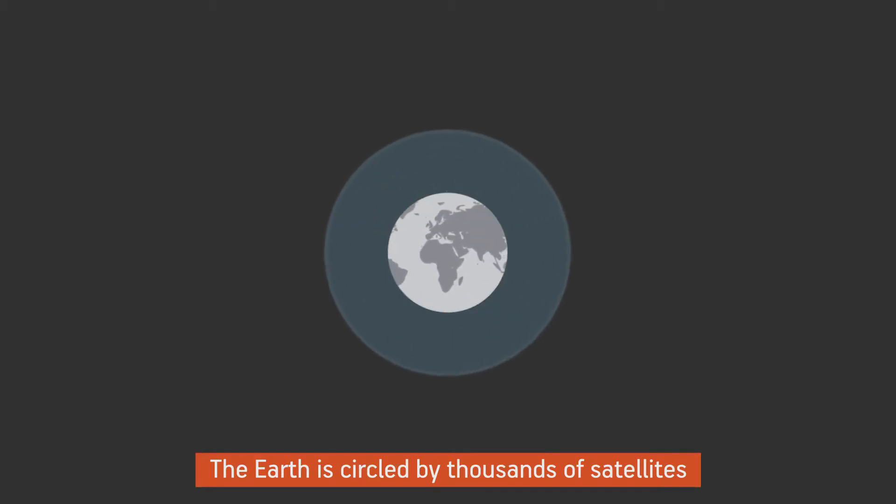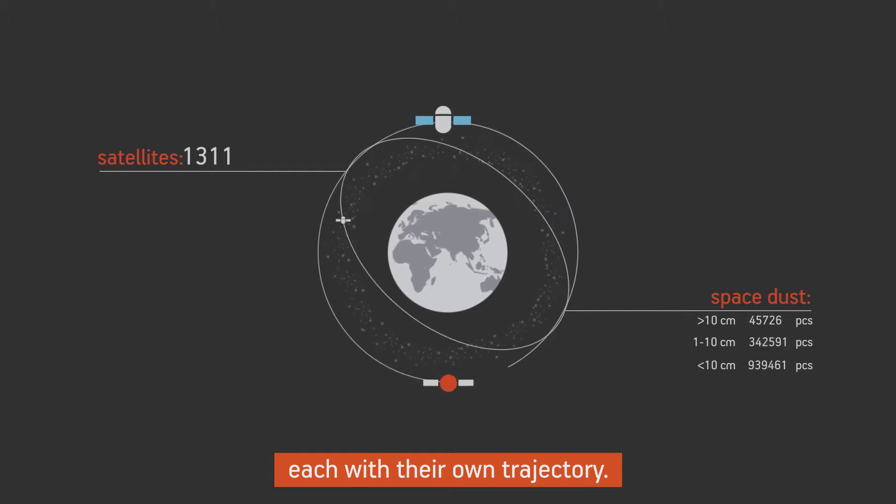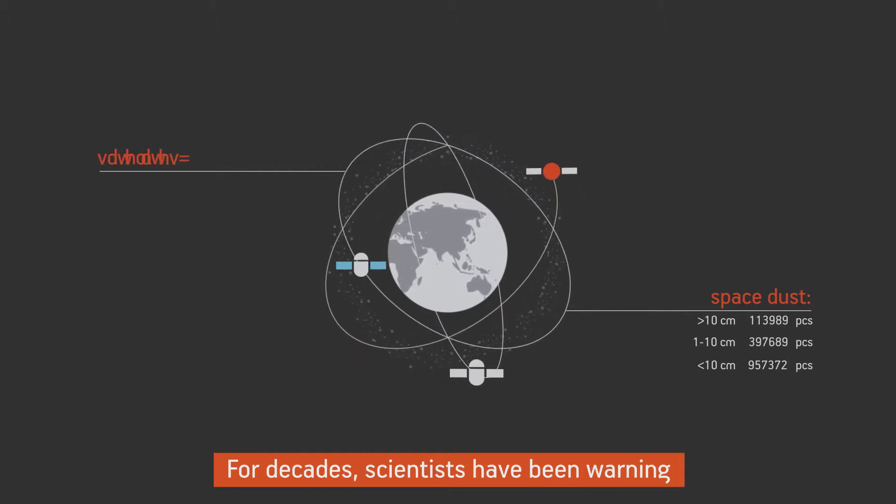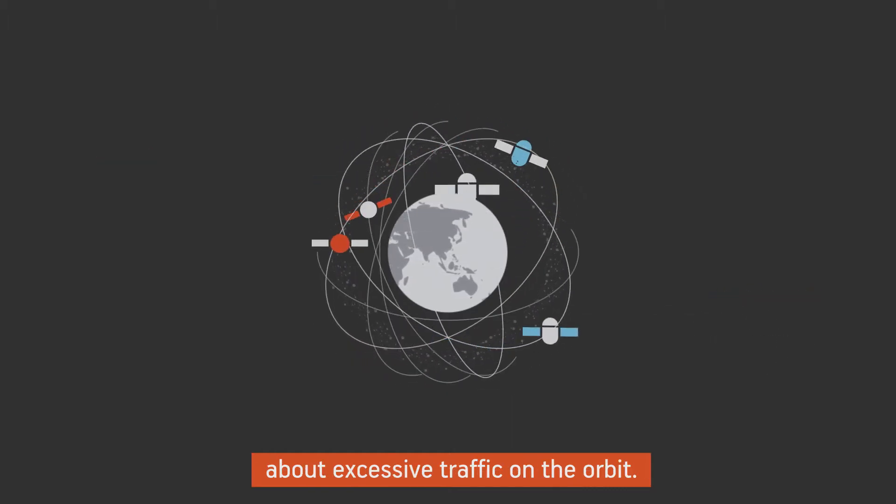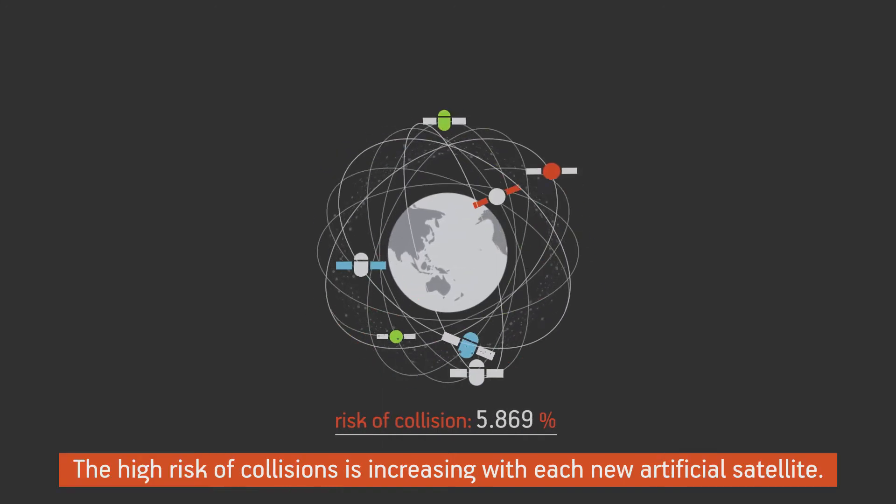The Earth is circled by thousands of satellites as well as all sorts of space debris, each with their own trajectory. For decades, scientists have been warning about excessive traffic on the orbit. The high risk of collisions is increasing with each new artificial satellite.